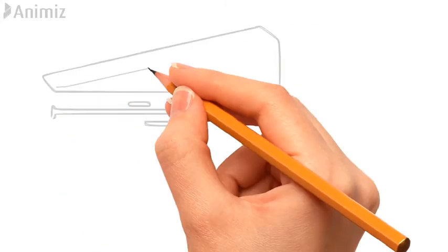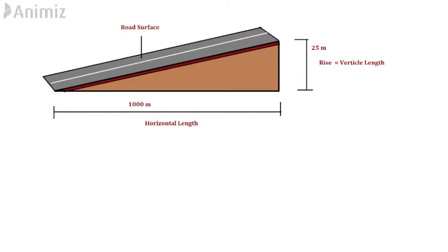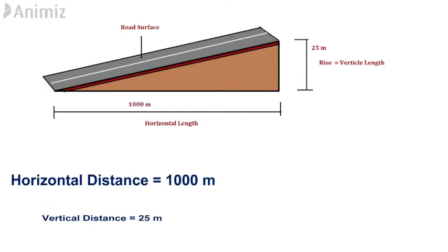Let's take an example. In the above picture, the horizontal distance is 1000 meters and vertical distance or rise or fall is 25 meters.